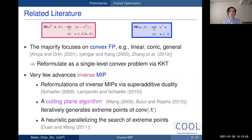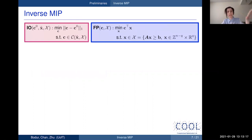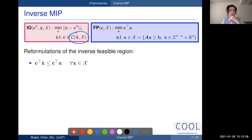Wang's cutting plane algorithm iteratively generates extreme points while solving the forward MIP as a subproblem, which can be computationally very costly. As such, this algorithm can only solve very small-size problems efficiently. Even after a decade, Wang's algorithm remains the state of the art in solving inverse MIPs, and our work builds on this cutting plane algorithm.